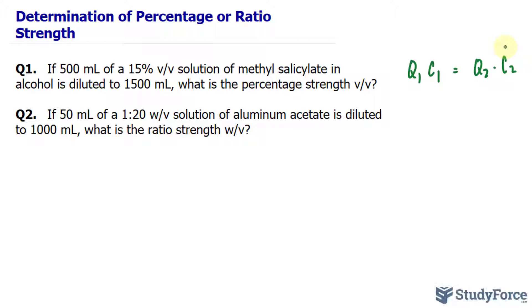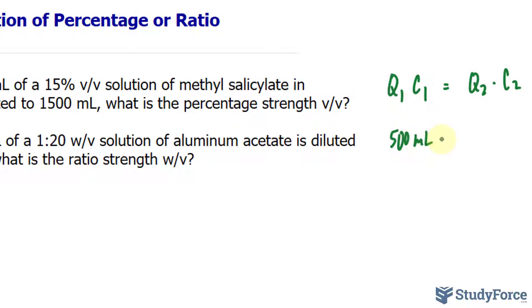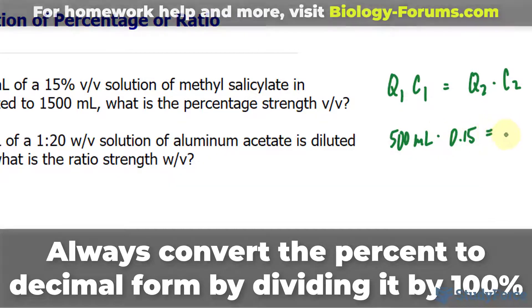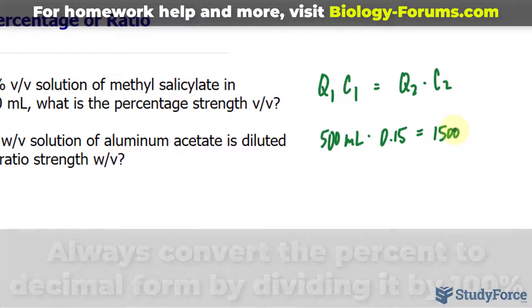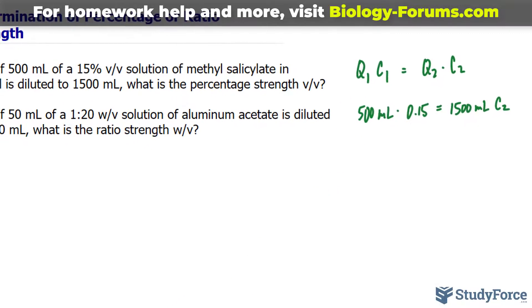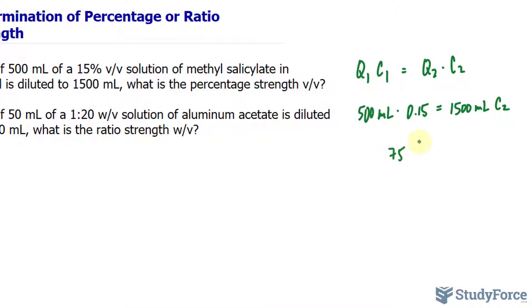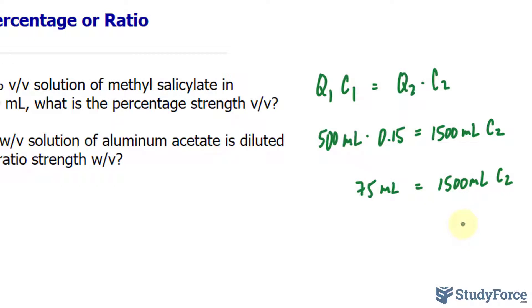I'm going to go ahead and do that for you, but I also want to explain to you how to interpret the 15% volume per volume and what that actually means. So let me go ahead and quickly do this, 500 milliliters times 0.15, and that dot represents multiplication. Then we have 1500, that's the final quantity, and it's a volume. And we are looking for the percentage strength, so C sub 2. You multiply these two numbers out, so I'll do that on my calculator, 500 times 0.15, and you get 75.